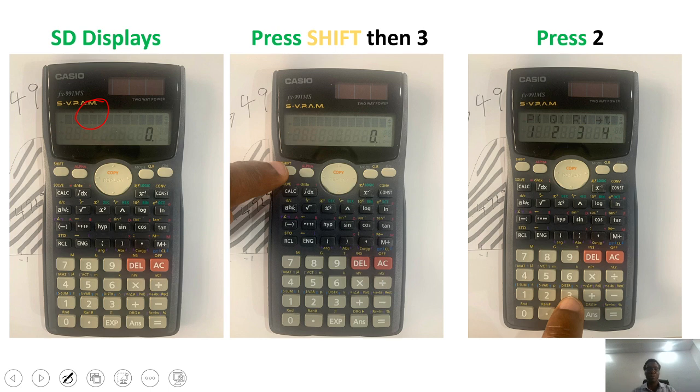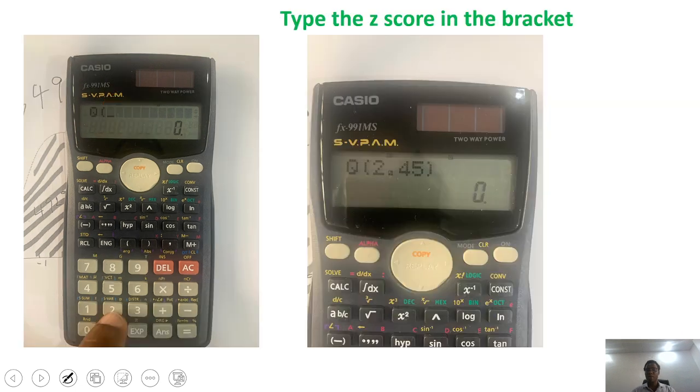To determine that proportion, first you need to press shift and then press 3, which represents distribution, because we are looking for distributions. If we do that, the calculator displays this, and then we're interested in Q. So we will press 2. If we press 2, then we can put in the z-score.